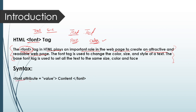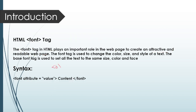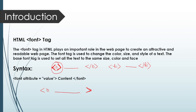Now I will show you the syntax of this tag. We write: font, attribute equals value, then the content — any text you want to write here — and then we close the font tag. Whatever we write within the tag brackets alongside the tag name is called the attribute of that particular tag.